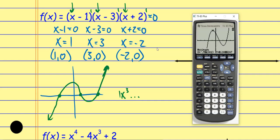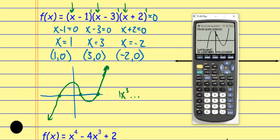Now I go back into the Calculate menu for the relative minimum — same process: left bound, right bound, guess. For the minimum value it says left bound, so I scroll to the left of the minimum and hit Enter, then to the right and hit Enter, then take a guess and get as close as I can. It spits out x = 2.12 and y = −4.061. I write those values down and then come back to the graph to plot everything.